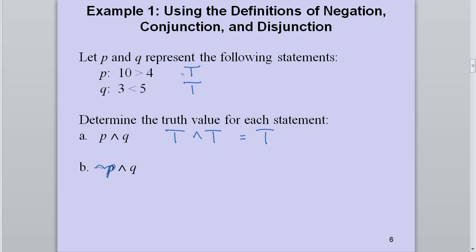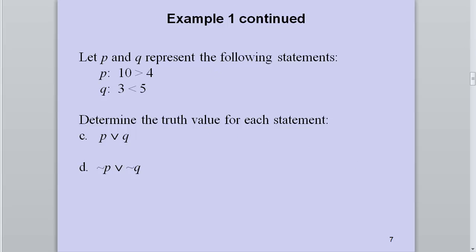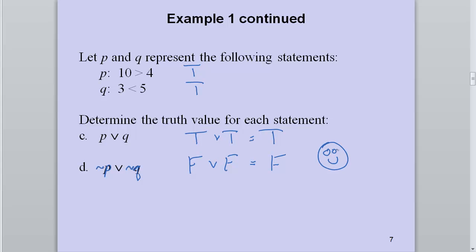For not P, I need the opposite truth value, so that's false. Q is still true, but since I have at least one false, the AND statement is false. When we actually know the value of the statements, we don't have to construct a full truth table. For the disjunction: true or true is true. For not P or not Q: not P is false, not Q is false, and with no true values, the whole statement is false.